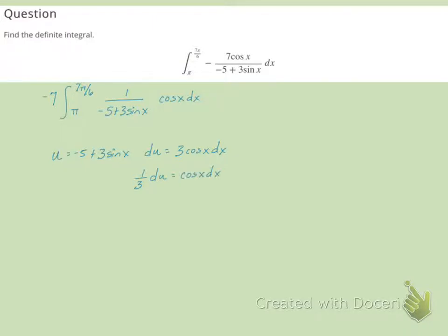I also need to change my limits of integration. So when I have x equal to pi, that means u will equal negative 5 plus 3 sine of pi. Well, sine of pi is 0, so this is going to be negative 5.